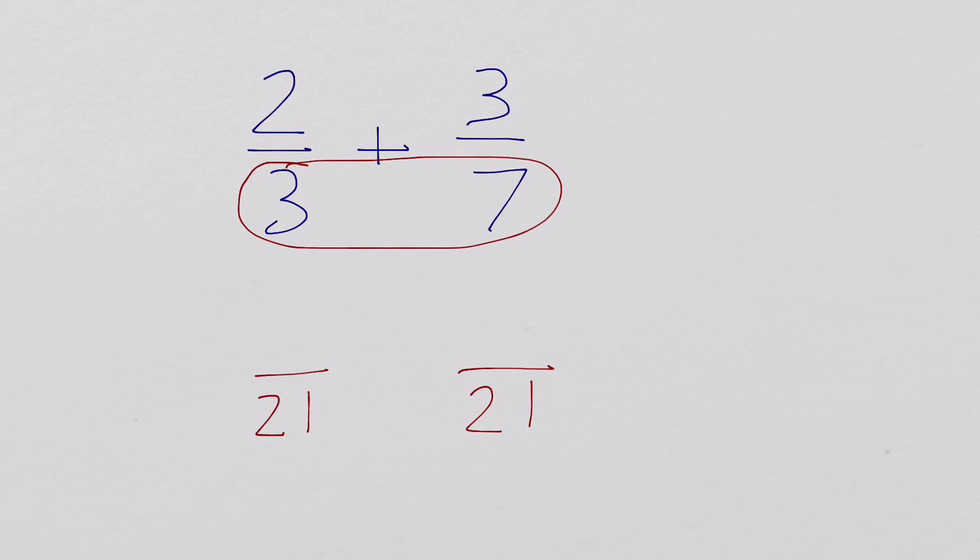To find our numerators, this is where the term cross-multiplying comes in. We cross multiply. So 2 times 7 is 14, and since I used the numerator over here, it becomes the numerator down here.